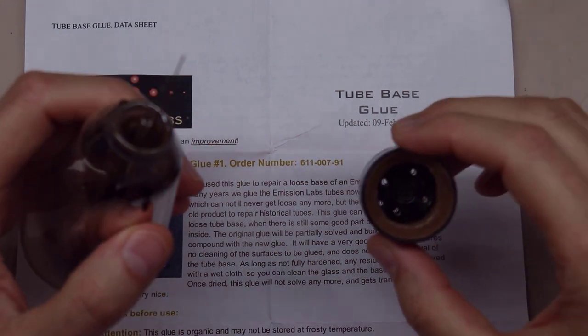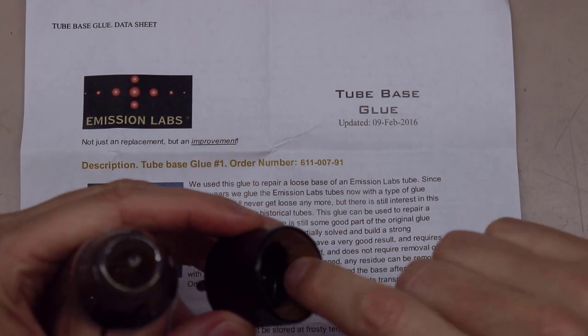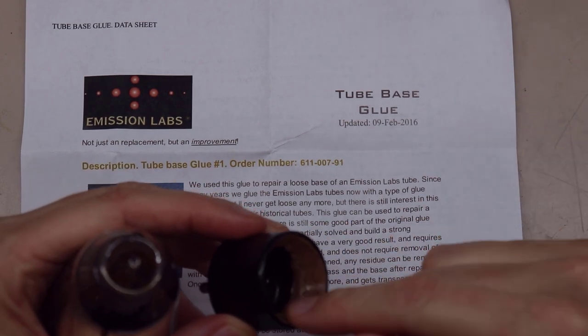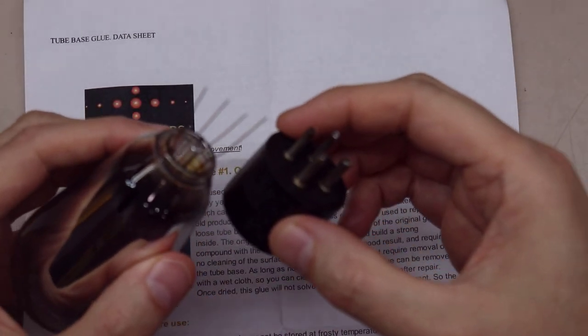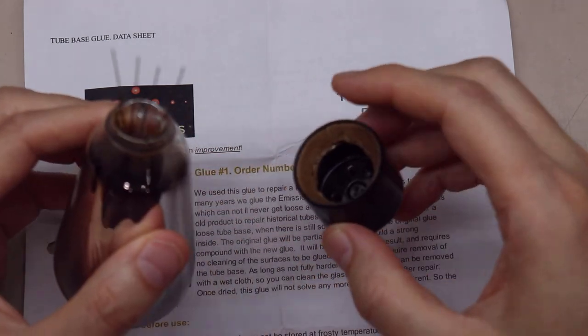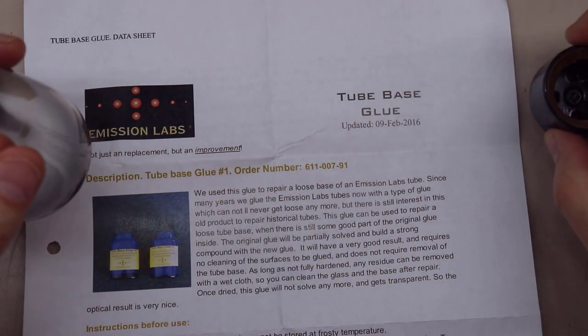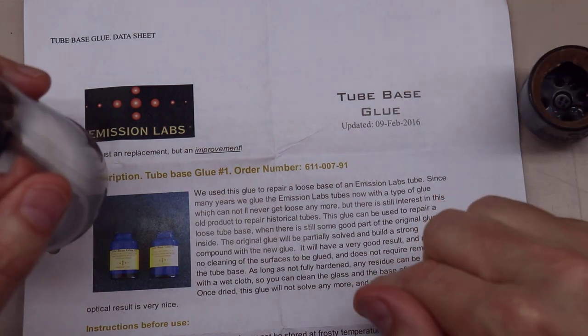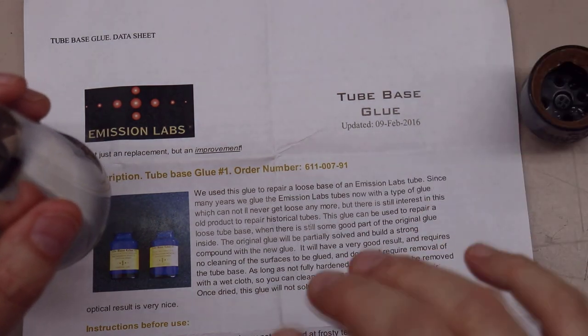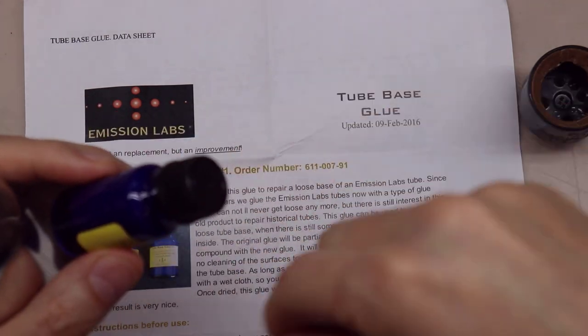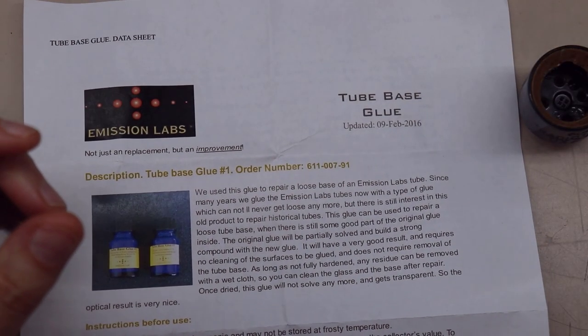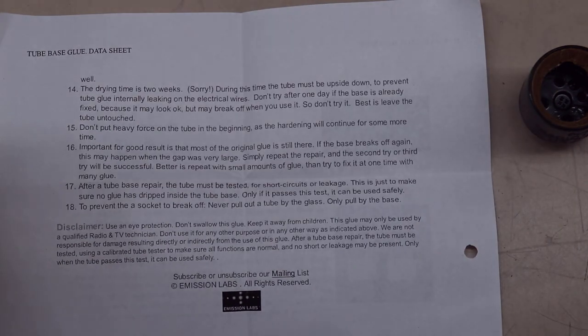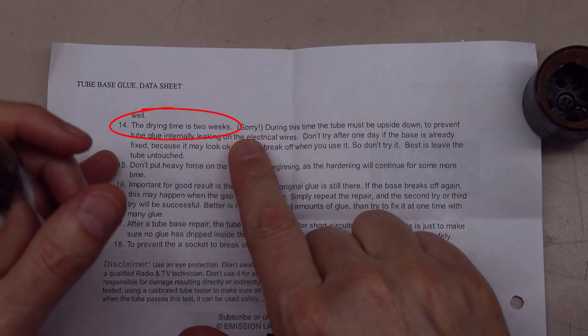And this glue is designed to kind of mix with this glue and soften it up some and adhere to the tube base. So it really causes it all to rebind. So it's relying on this glue here itself. It will also tell you in here that this stuff is very strong smell. There's a little brush you'll use to put it in there with and that the dry time on it, two weeks says.